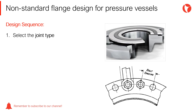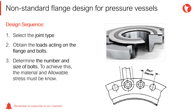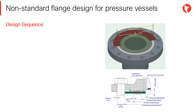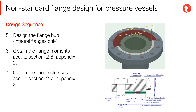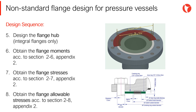First, select the joint type. Second, obtain the loads acting on the flange and bolts. Third, determine the number and size of the bolts. Fourth, obtain the bolt circle diameter. Fifth, design the flange hub for integral flanges only. Sixth, obtain the flange moment according to Section 2.6 of Appendix 2. Seventh, obtain the flange stresses according to Section 2.7 of Appendix 2. Eighth, obtain the flange allowable stresses according to Section 2.8 of Appendix 2.